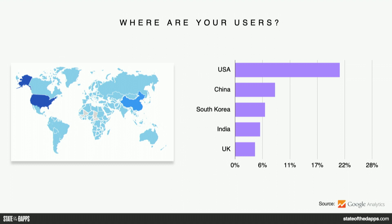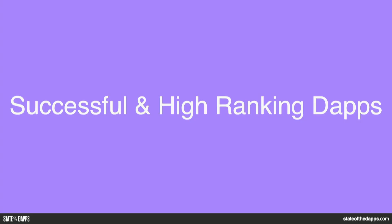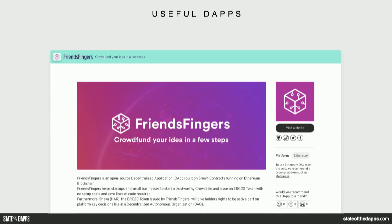Where are your users? Quite obviously, the US is a very big market. Second is China and South Korea — we've seen a big boom with the Korean developer market. A lot of Dapps come from there; they have great developers and a very energetic community. On successful and high ranking Dapps: we consider them successful based on all the previous ranking factors. We've chosen these Dapps — and I apologize for some of the Dapp names; we don't get to choose them, though we can sometimes recommend renaming.